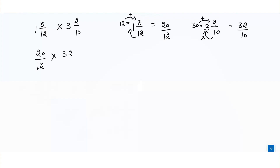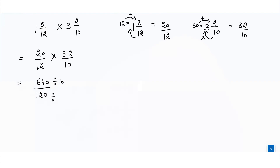Now we multiply numerator with numerator and denominator with denominator. 20 multiplied by 32 gives 640, and 12 multiplied by 10 gives 120. We simplify by dividing by 10 to get 64 over 12, then divide by 4 to get 16 over 3.